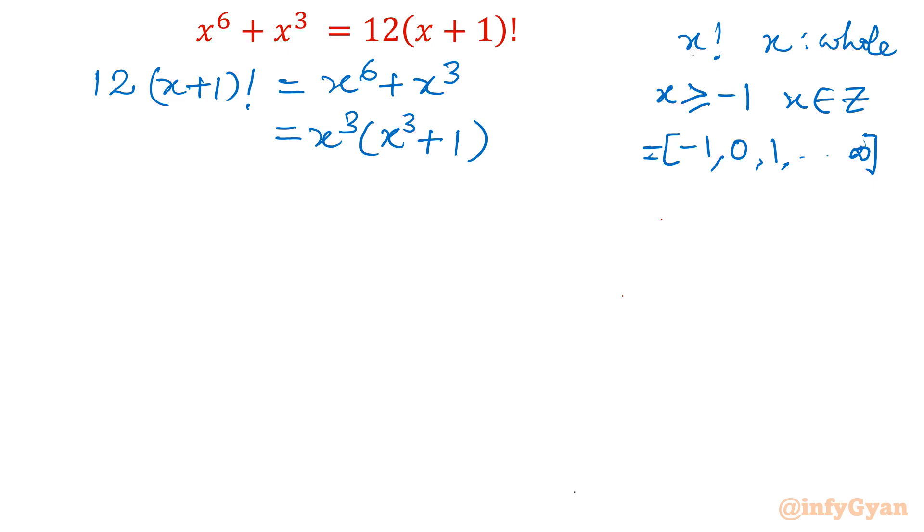Now I will write two identities. First one, a cube plus b cube formula: a cube plus b cube is a plus b in second bracket a square plus b square minus ab. And second is recursive formula of factorials: n times n minus 1 factorial.